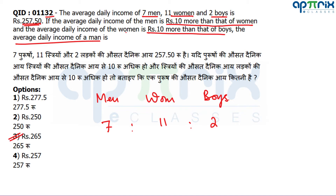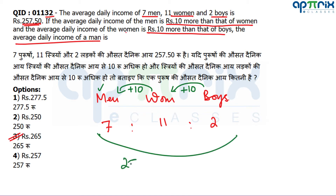From the question, men's daily income is highest since boys earn 20 less than men and women earn 10 less than men. Now the average (257.50) must lie between the lowest and highest values. So men's average cannot be 257.50 or below — that would make the overall average less than 257.50, which is impossible.